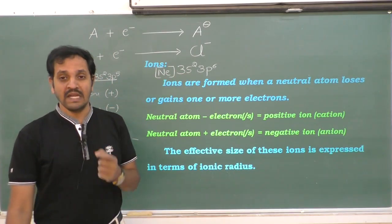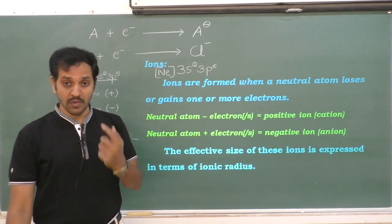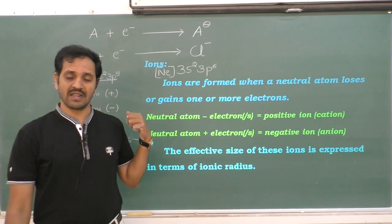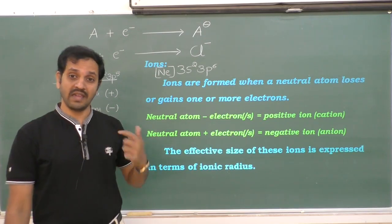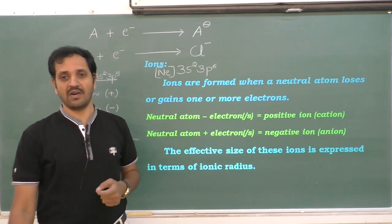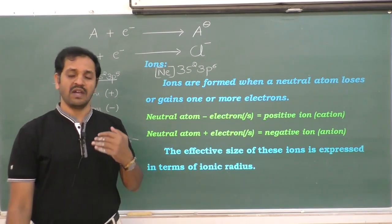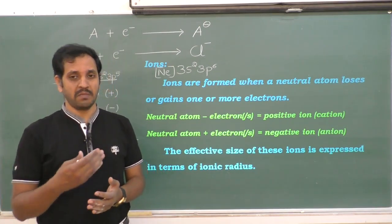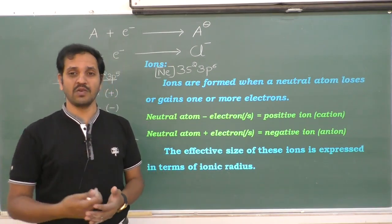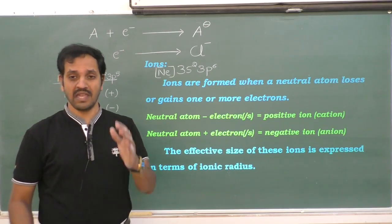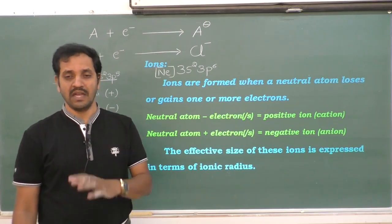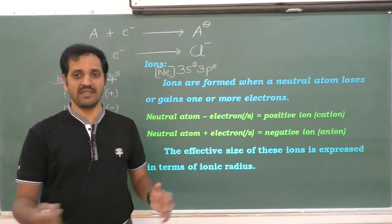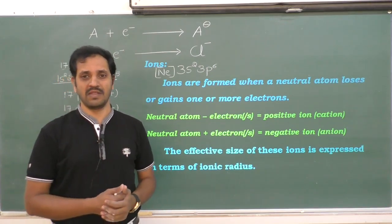Sodium loses one electron to attain the octet configuration, while chlorine gains one electron to attain the octet configuration. The one that forms an anion develops a negative charge, and the one that forms a cation develops a positive charge.